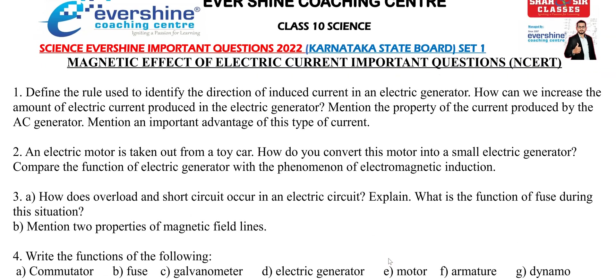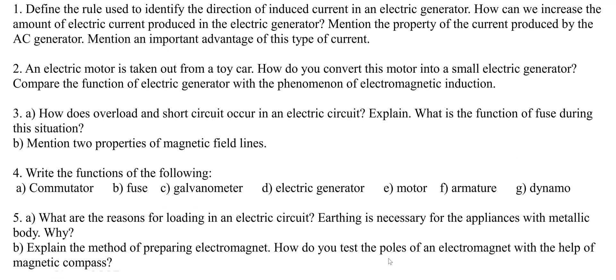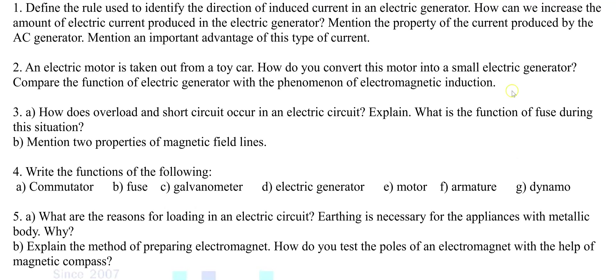And next: how does overload and short circuit occur in an electric circuit? Explain what is the function of the fuse during this situation. Mention two properties of magnetic field lines. This is option A and this is option B.